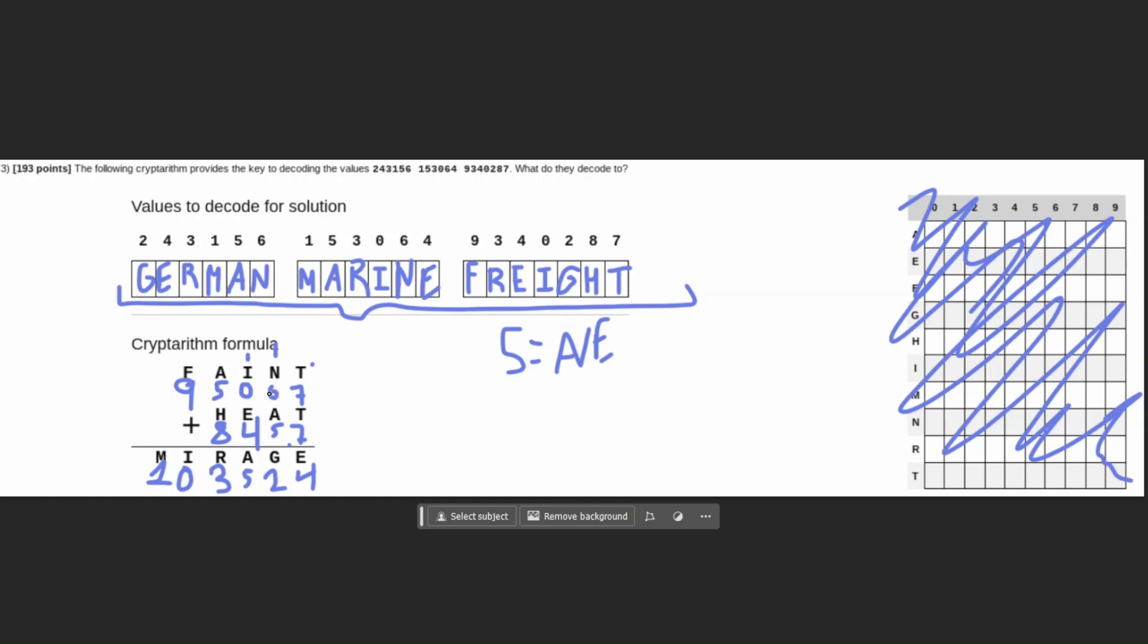So we have the answer: German, Marine, Fright to this value of numbers. So this is going to be our first practice problem. We're going to do another one on addition, and then I'll make a separate video on subtraction cryptarithm problems if you need me to do those. This one I really just used aristocratic my way through and looking at word patterns, which is extremely important.